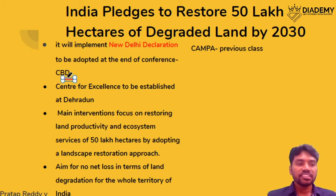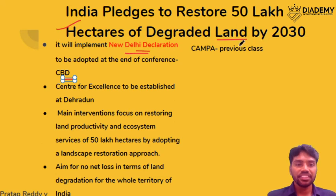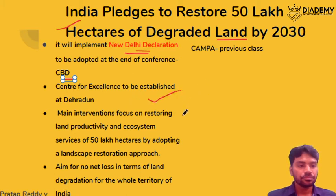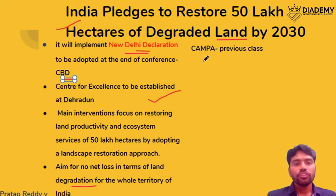In the Convention on Biological Diversity (CBD), there was one declaration called the New Delhi Declaration. To implement that declaration, India has now pledged to restore 50 lakh hectares of degraded land by 2030. For this initiative, a Centre of Excellence is to be established at Dehradun, aimed at restoring degraded land. We have already discussed CAMPA and the fund distribution — 90% to the states and 10% stays with the central government.